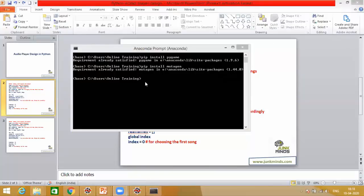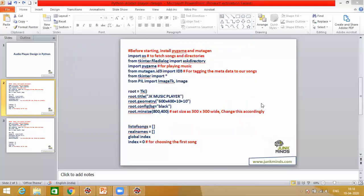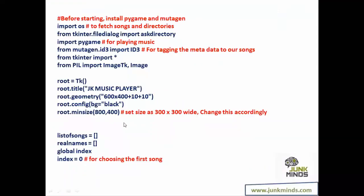Once everything is properly installed, exit the prompt and go back to the code. The two components needed — pygame and mutagen — are now available. Go to your Spyder screen and create a new file.